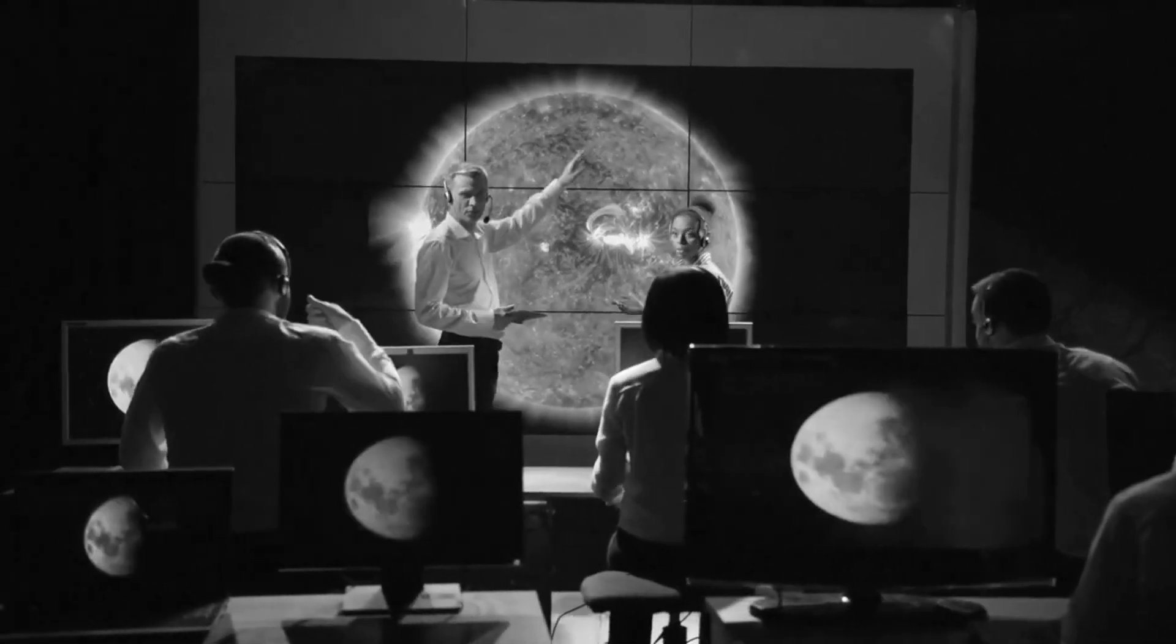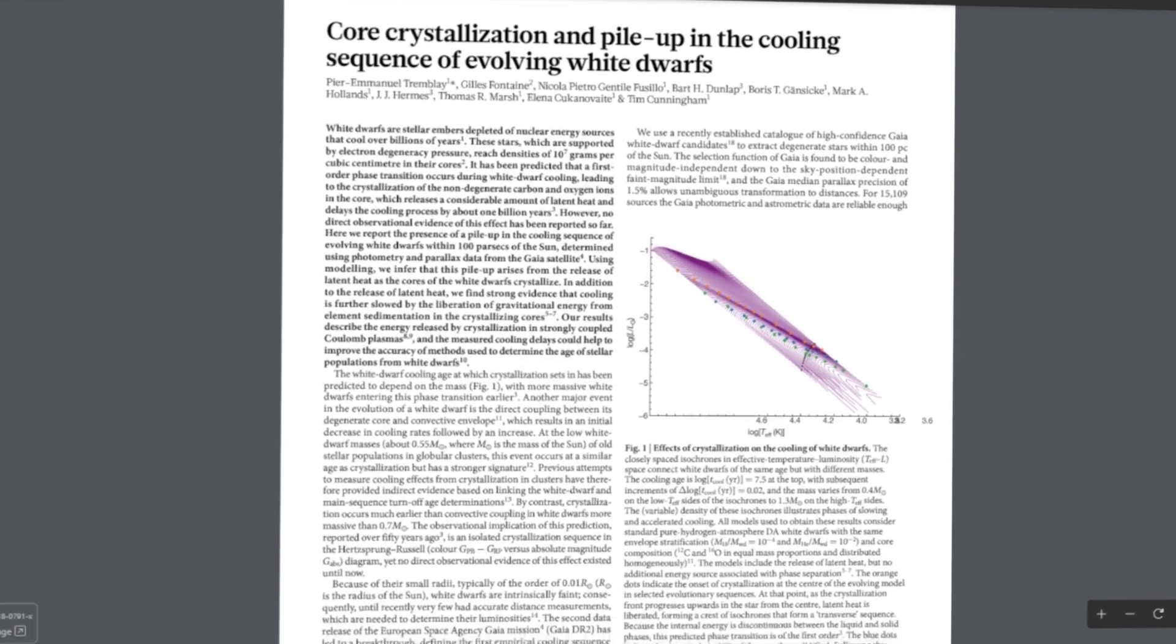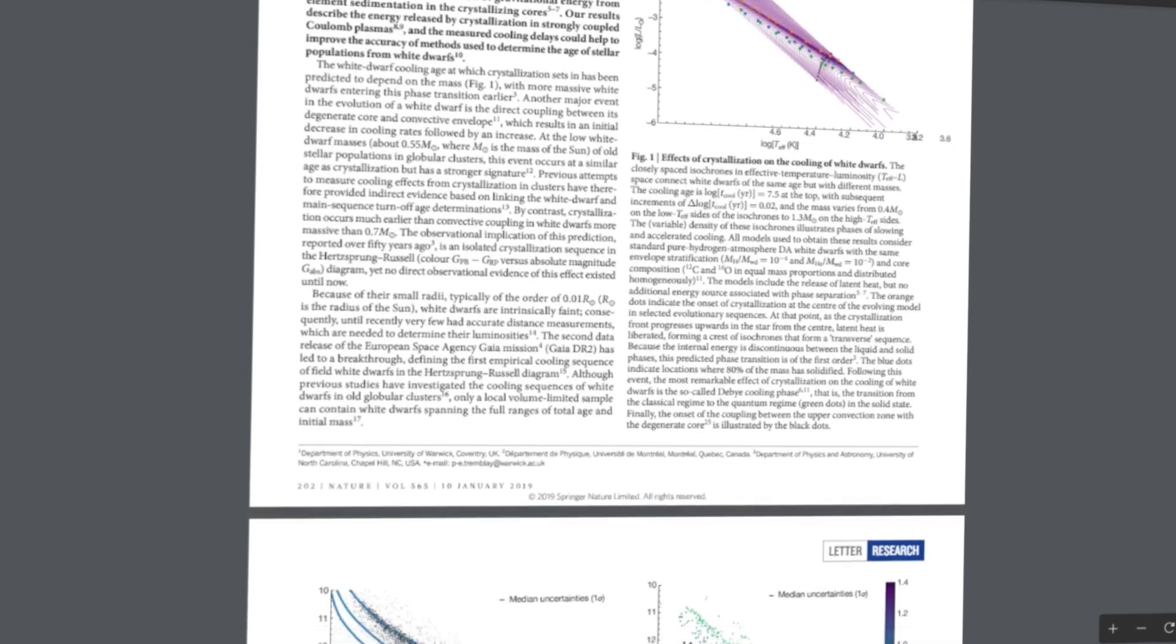Half a century ago, theorists predicted that white dwarfs solidify into crystals over time, and a research paper released in 2019 found that this is indeed the case. Now more recently, it was discovered that a population of freezing white dwarfs maintain a constant luminosity for duration comparable to the age of the universe.